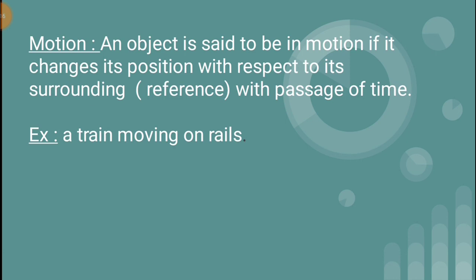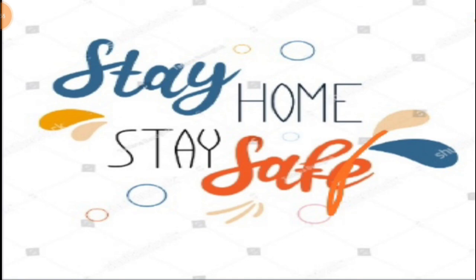Nothing is in absolute rest or absolute motion in the whole universe. We always describe the position of an object with reference to something. An object is said to be in motion if it changes its position with respect to its surroundings, or reference, with the passage of time. For example, a train moving on rails is in motion because it is changing its position with respect to the rails. Thank you, students — at this crucial time, stay home and stay safe, and keep on studying.